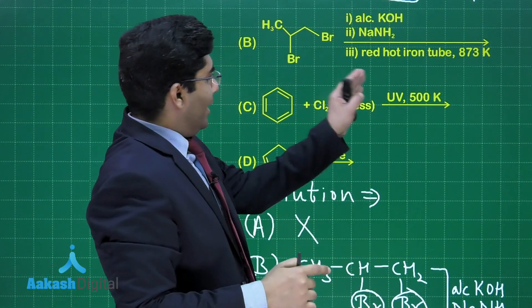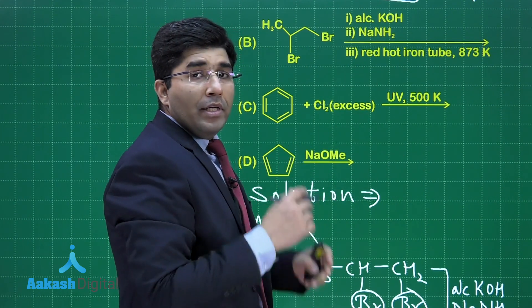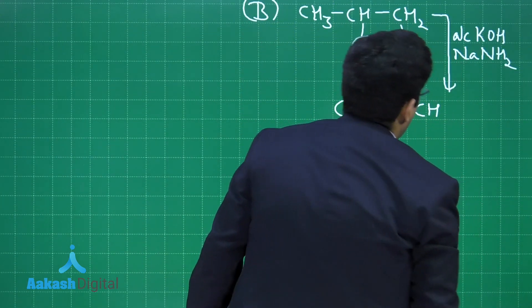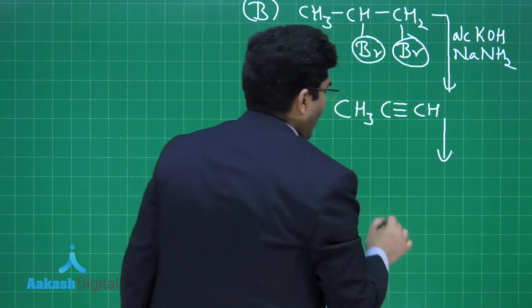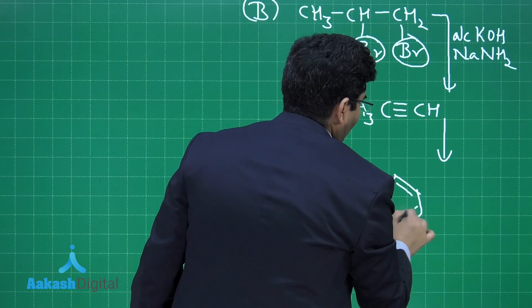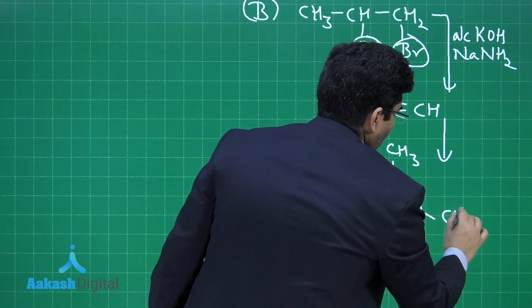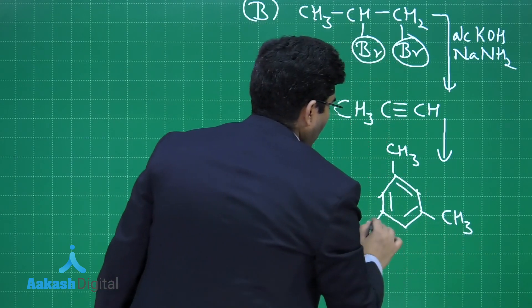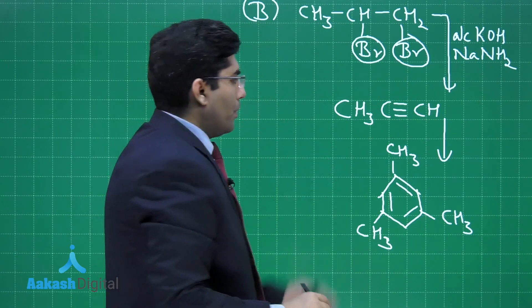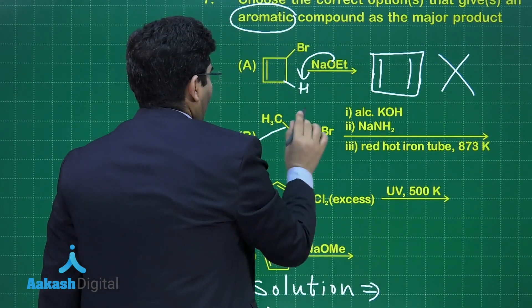We will get CH₃-C≡CH. After that, passing it through the red hot iron tube at 873 Kelvin, trimerization will take place. This is a very famous reaction. After the trimerization we will get mesitylene, which is CH₃, CH₃, CH₃ on the benzene ring. So this is an aromatic compound.